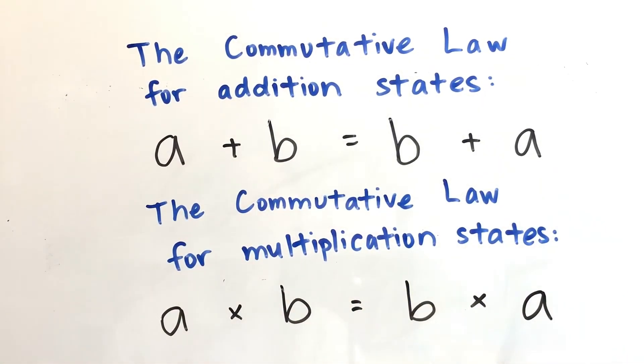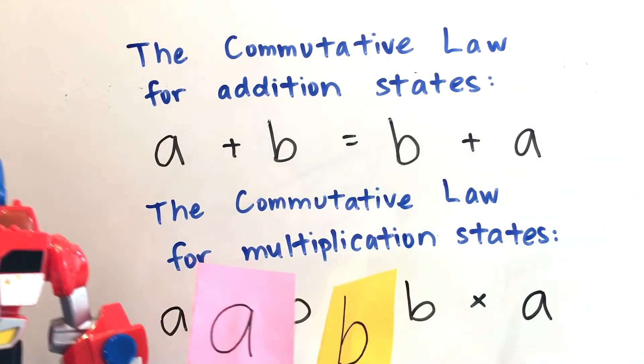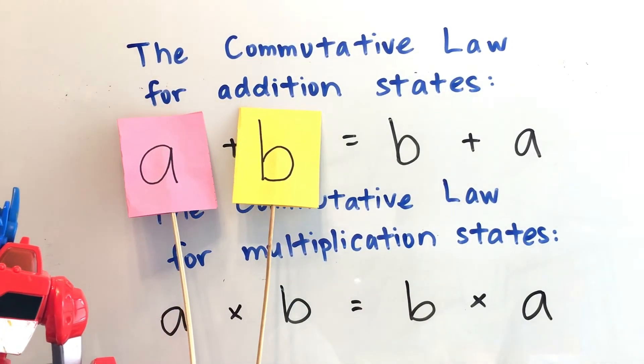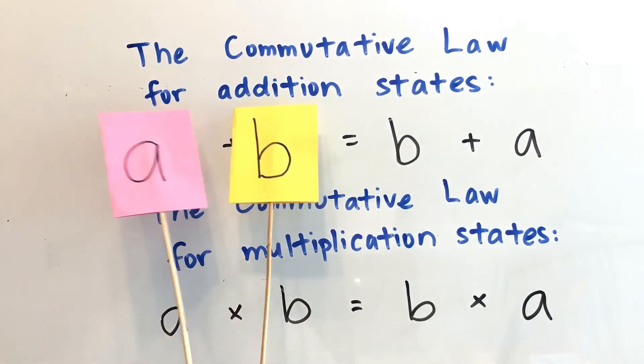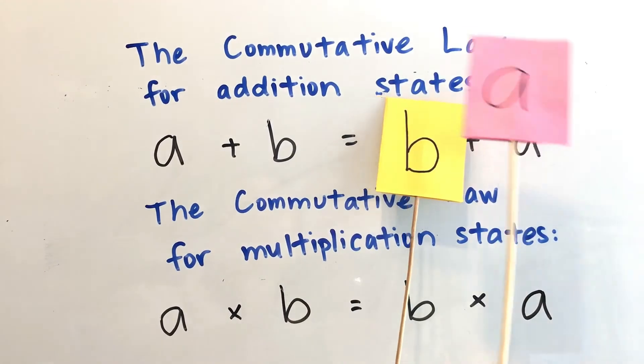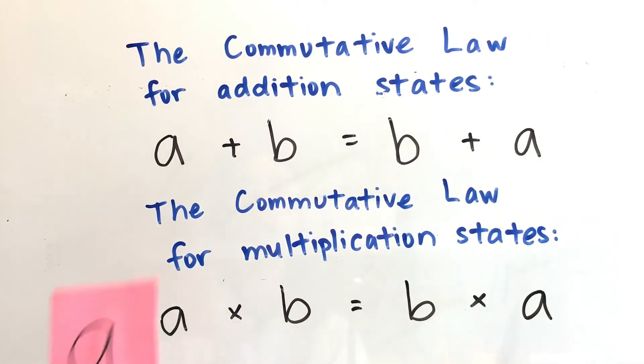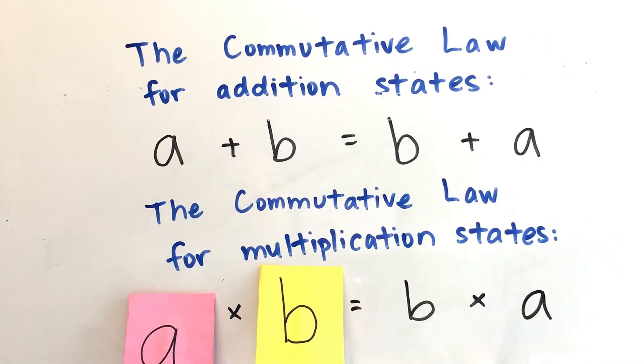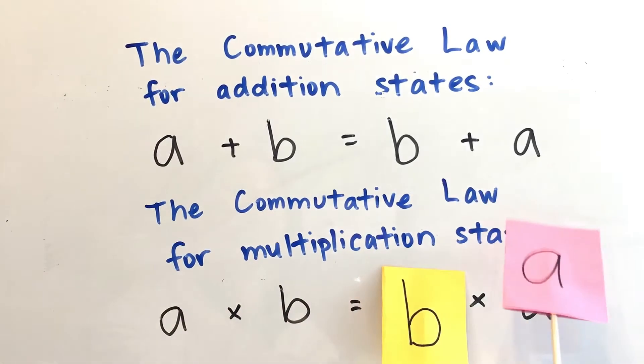Now, I'll come back and I'll read it together with you. The commutative law for addition states, a plus b equals b plus a. And the commutative law for multiplication states, a times b equals b times a.